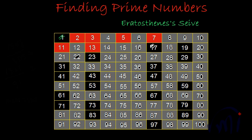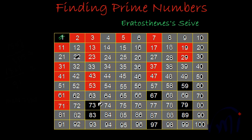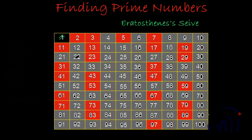All numbers still in black are prime numbers — these are the prime numbers between 1 and 100. So when you are asked to find all prime numbers till a given number, find the square root of that number and check divisibility of all numbers up to that square root. This was the Sieve of Eratosthenes — one method of finding prime numbers.